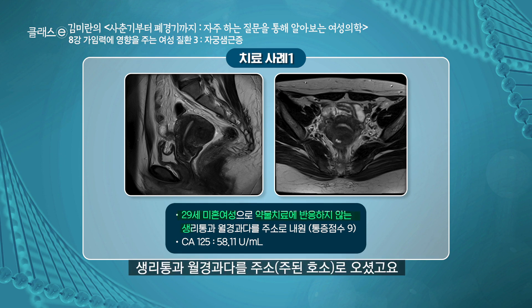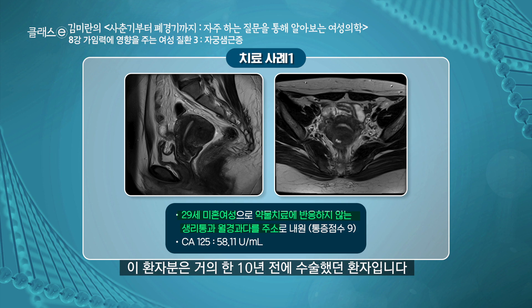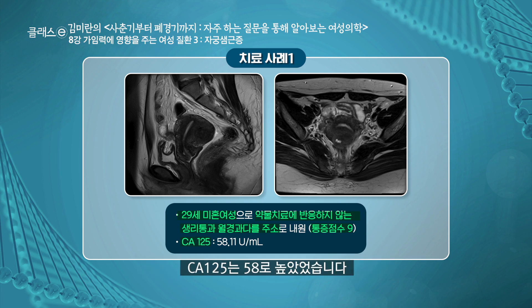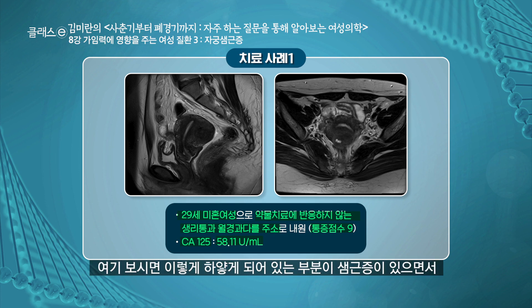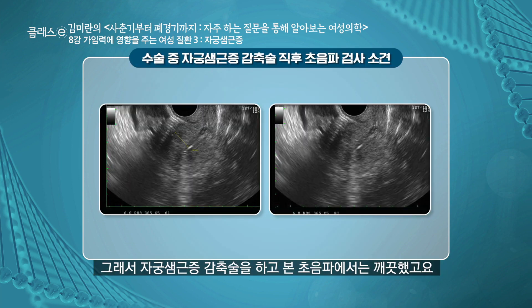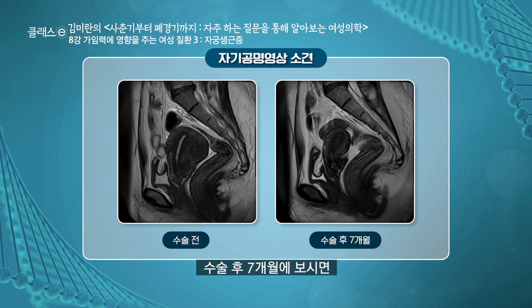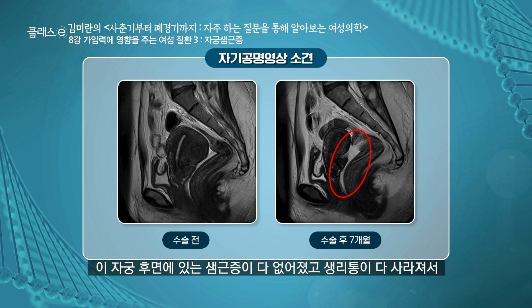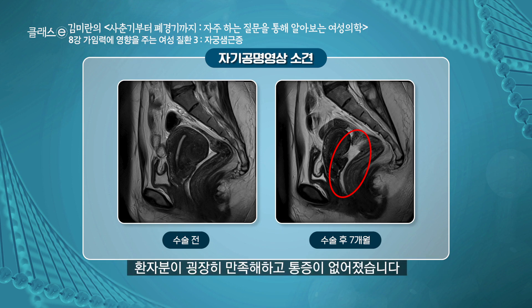증례를 말씀드리겠습니다. 29세 미혼 여성으로 약물 치료에 반응을 하지 않는 생리통과 월경 과다를 주소로 오셨습니다. 통증 점수는 10점 만점에 9점이었고, CA125는 58로 높았습니다. 이분은 국소적으로 뒤쪽에 자궁 선근증이 있었는데, 여기서 출혈을 하기 때문에 생리통이 엄청나게 심했던 경우였습니다. 자궁 선근증 감축술을 하고 나서 초음파에서 깨끗했고, 수술 후 7개월에 자궁 후면에 있는 선근증이 다 없어졌으며 생리통이 다 사라져서 환자분이 굉장히 만족하셨습니다.